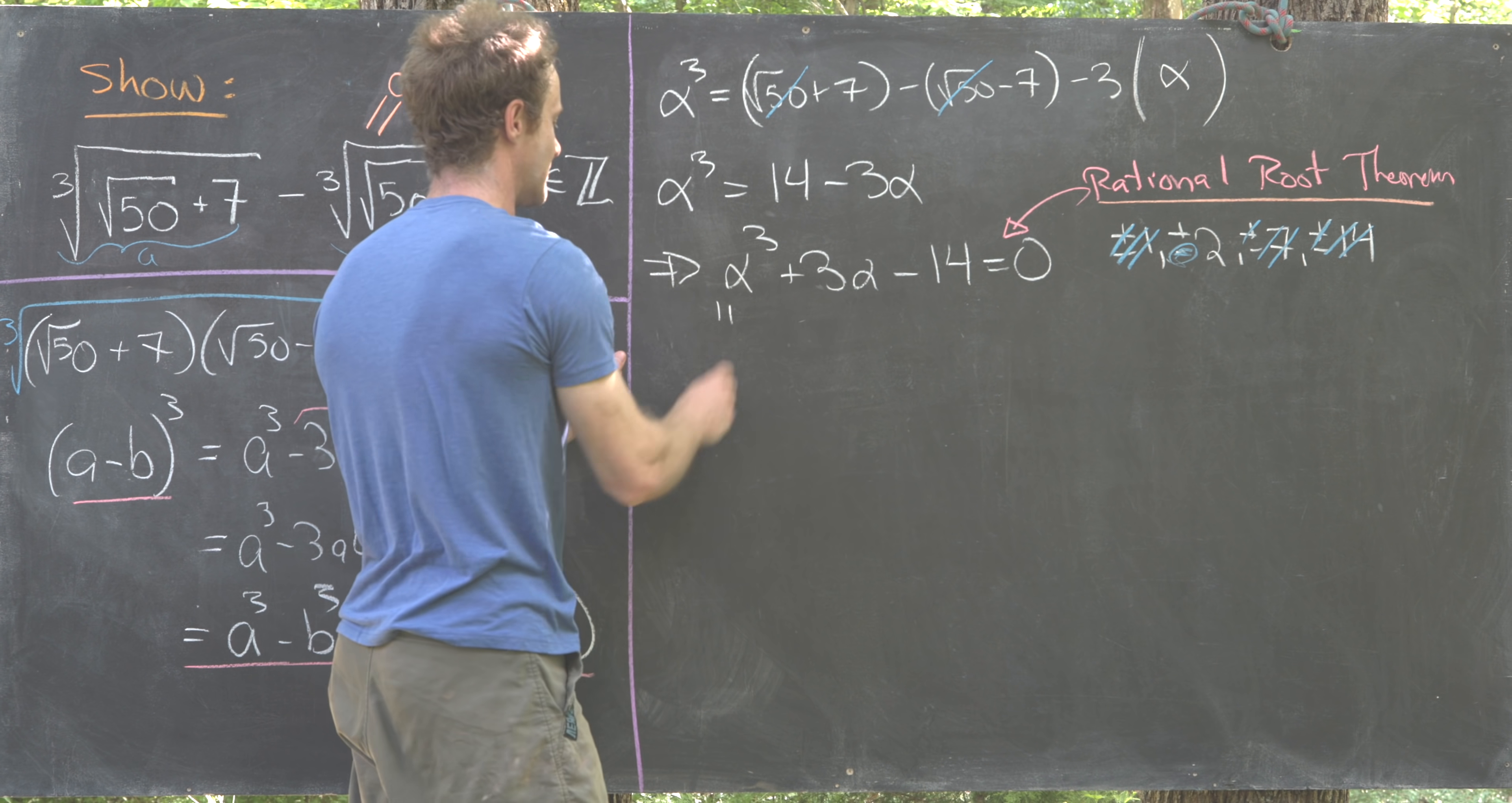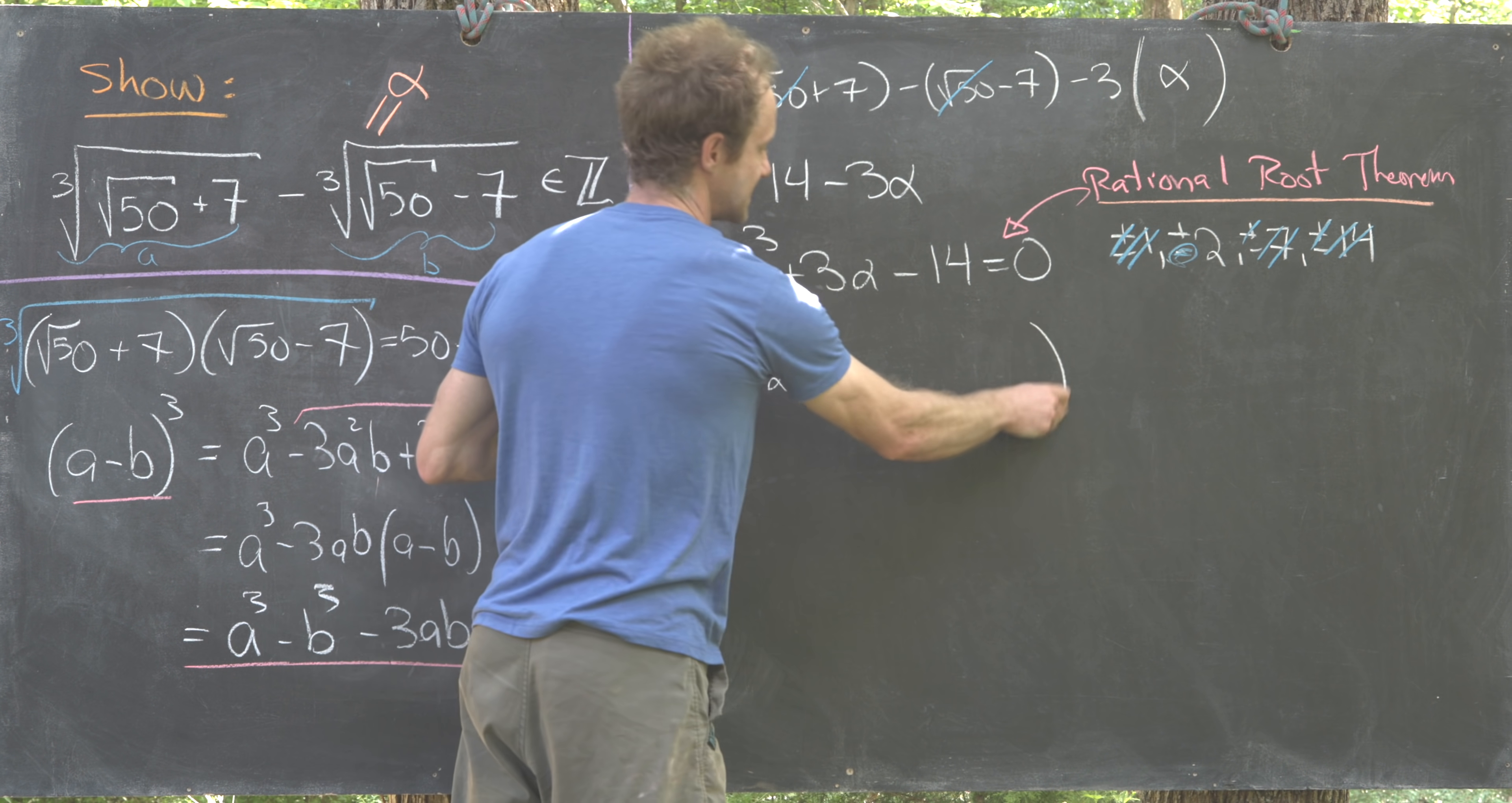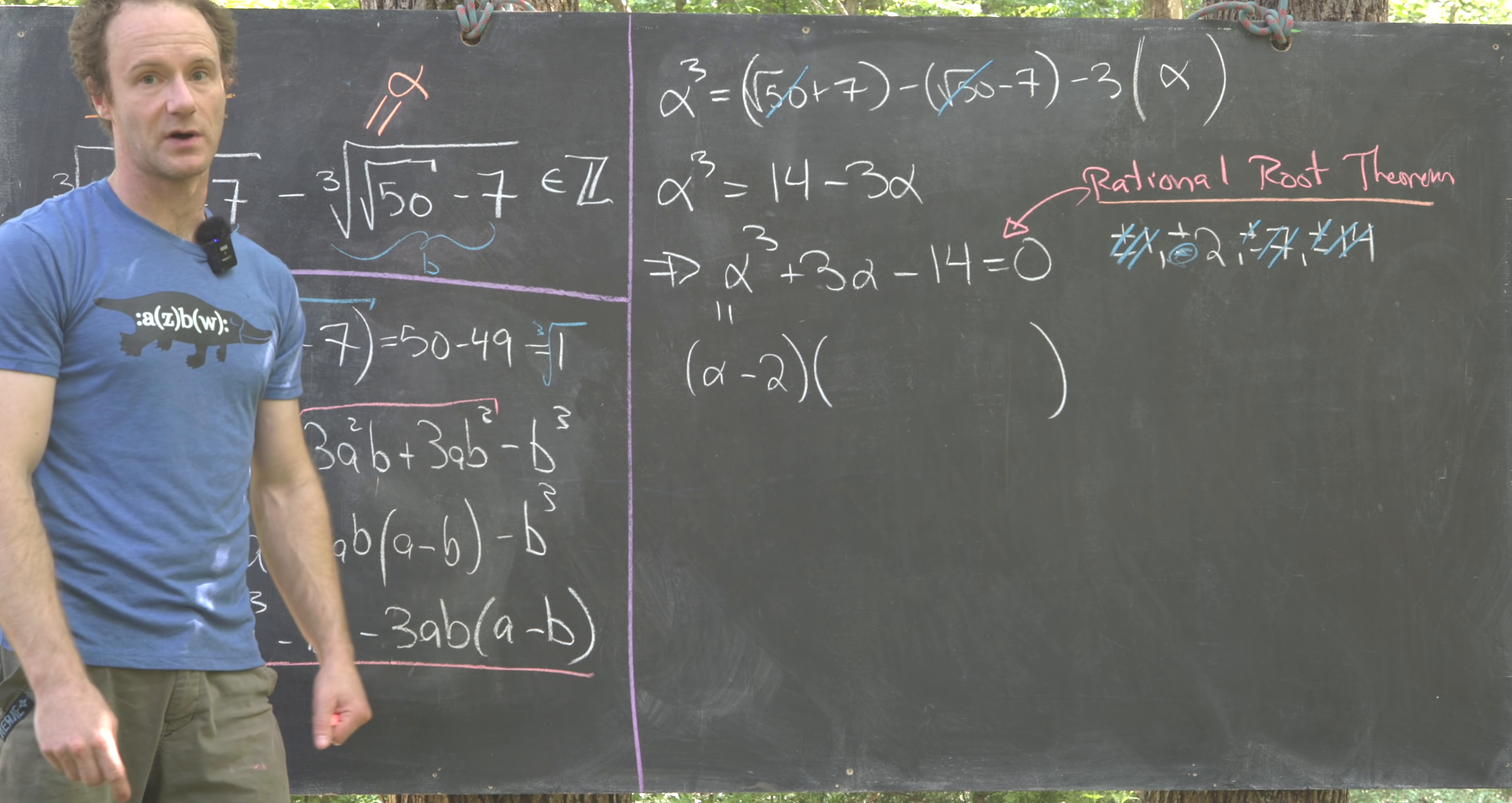That tells us we should be able to factor this as alpha minus 2 times some quadratic polynomial. We just need to figure out that quadratic polynomial.